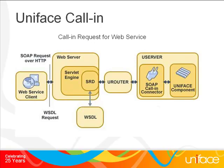Next, a client makes a web service request and sends it to the web server that redirects the request to the SRD servlet. The SRD activates the Uniface service component. The SOAP calling connector detects that this is a SOAP request, makes the SOAP data types mapping, and activates the operation defining the request. The Uniface service component handles the operation. If this is an asynchronous communication, there is no further activity. For synchronous communication, a response must be passed back via the SOAP connector, SRD, and web server back to the client.